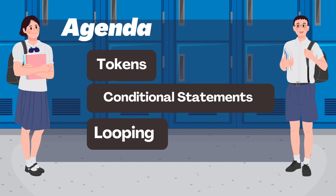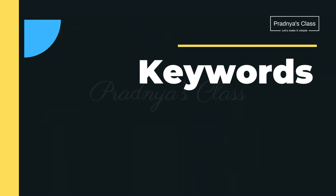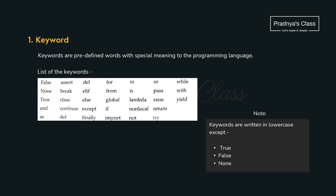Let's begin with tokens. Here is a list of tokens in Python: the first is keyword, the second is identifiers, the third is literals, the fourth is operators, and the fifth is punctuators. Out of these, identifiers and operators are very important. A token is the smallest unit of the program with the help of which we write programming statements.